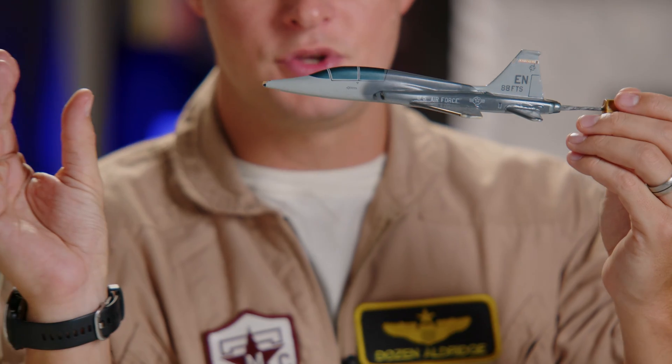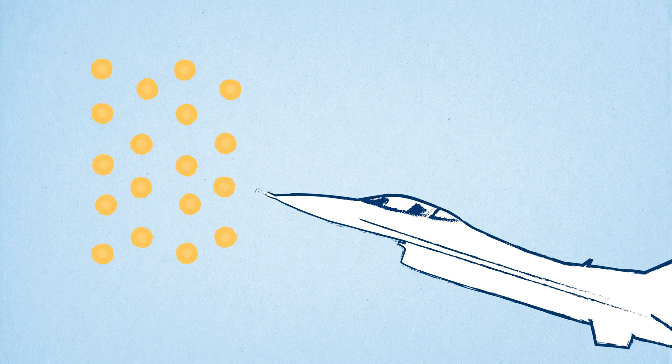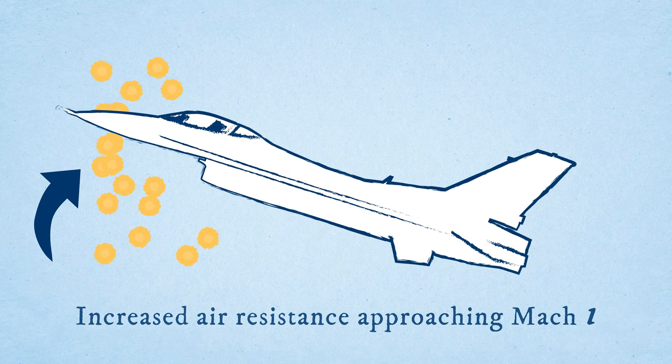As you increase your speed and get closer and closer to the speed of sound — closer to Mach 1 — those air molecules start to compress and you start getting a lot more resistance on the aircraft. Back in the day they thought there was a wall there, and that when you hit the speed where you were traveling as fast as sound, there would be so much aerodynamic drag that it would literally rip apart any aircraft trying to go through it.